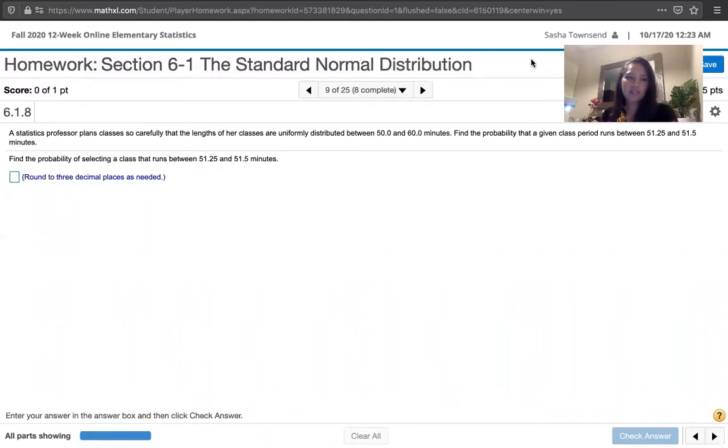The problem statement says a statistics professor plans classes so carefully that the lengths of her classes are uniformly distributed between 50 minutes and 60 minutes. Find the probability that a given class period runs between 51.25 minutes and 51.5 minutes.